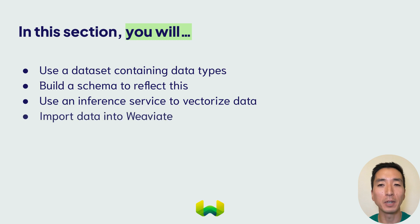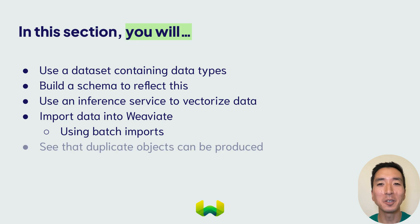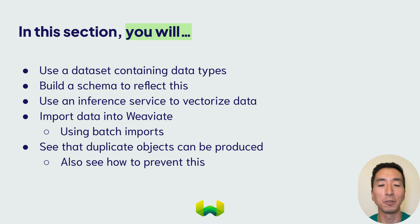And of course, we'll import our dataset into Weaviate. Here, you'll be able to apply your new knowledge of a batch import process, specifying the number of objects per batch and parallelization. You'll also see how the import process can produce duplicates, and how you might go about avoiding this outcome. You'll see how the optional object ID can be used to modify this behavior at import time, and how to make sure that only unique items are added to the instance.